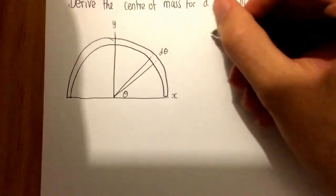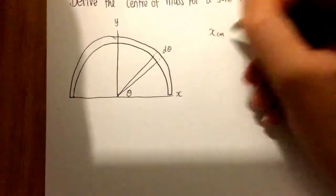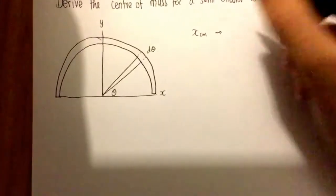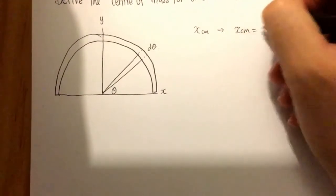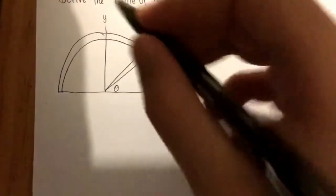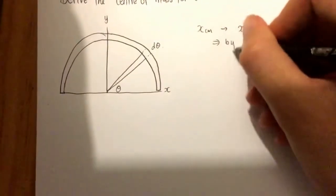What we want to do is we want to find the centre of mass. So let's start with the x centre of mass. Well clearly, based on what we've defined with our axes, the x centre of mass is equal to zero. We know that the centre of mass has got to lie along this line and that's by symmetry.